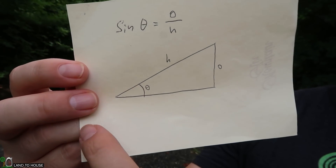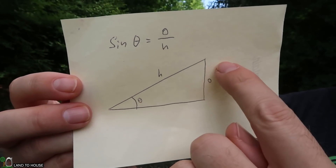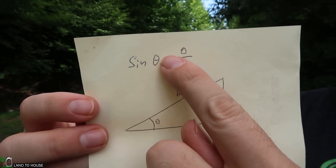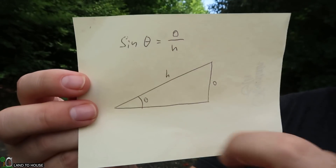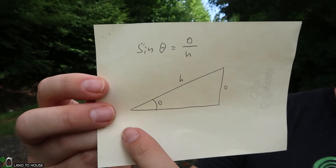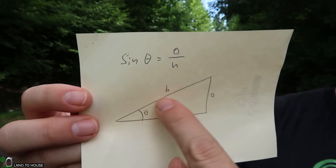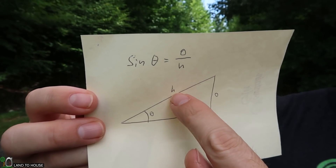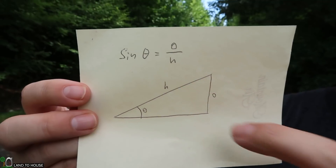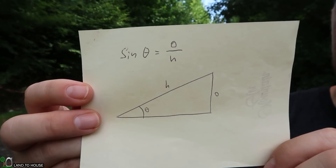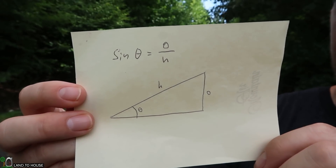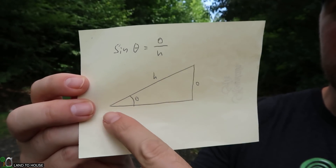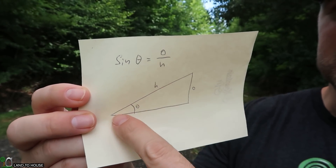Your ram pump is right here and your storage tanks are up here — it's simply sine theta equals opposite over hypotenuse. We're going to measure from where we're standing up to the top to get the hypotenuse value, and then find the angle with our protractor. So let's do the walking to find what this distance is.